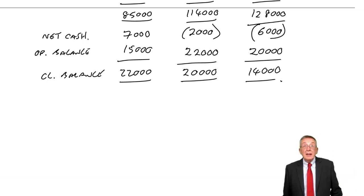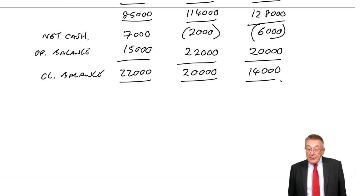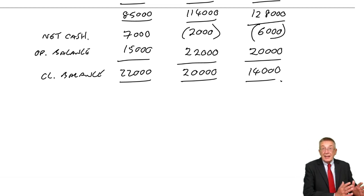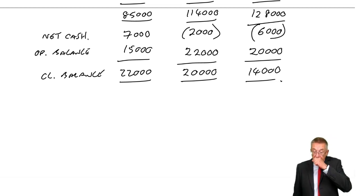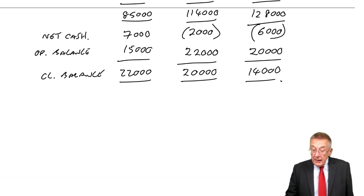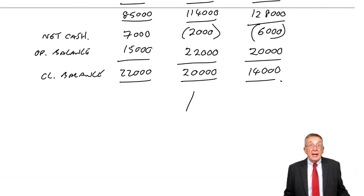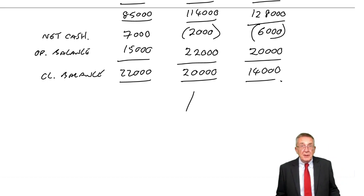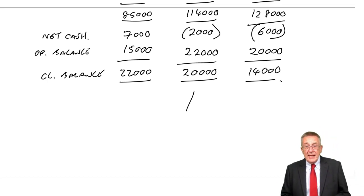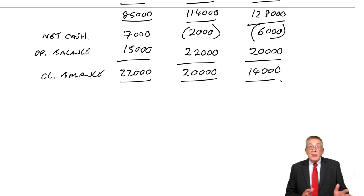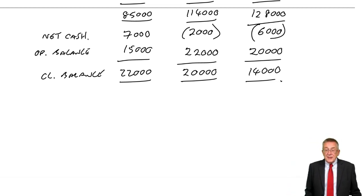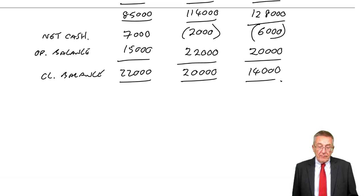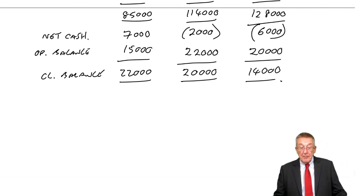Cash is critical to any business, obviously. So it's very important they plan monthly what will happen to the balance. Because if they did find that in one month — maybe February — it was going to go negative, they'd have to start making arrangements to borrow that money, or maybe move some expenses or receipts to spend less in February or receive more. So there we are — a cash budget, and it's really important.